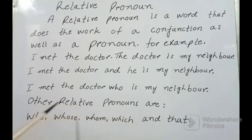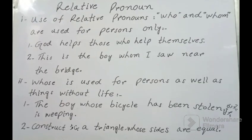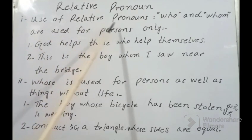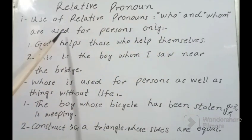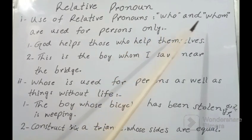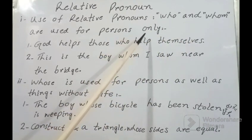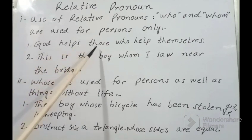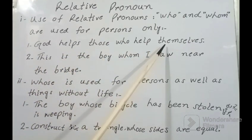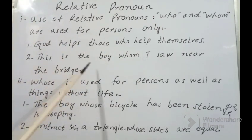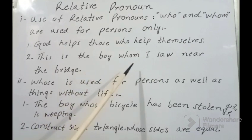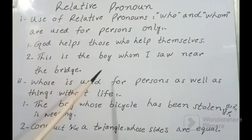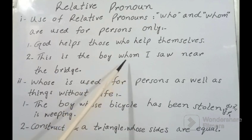Other relative pronouns are: who, whose, whom, which, and that. Number one: Use of relative pronouns — 'who' and 'whom' are used for persons only. For example: 'God helps those who help themselves' — اللہ تعالیٰ ان کی مدد کرتے ہیں جو اپنی مدد آپ کرتے ہیں. Number two: 'This is the boy whom I saw near the bridge' — یہ وہ لڑکا ہے جسے میں نے پل کے پاس دیکھا.